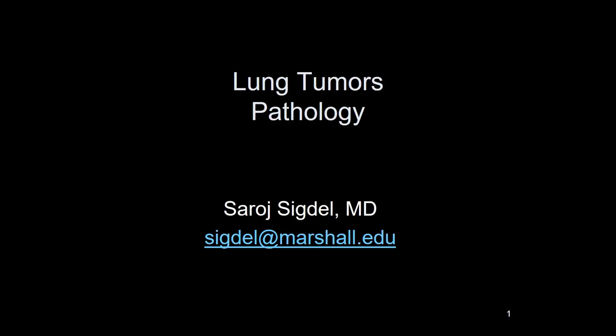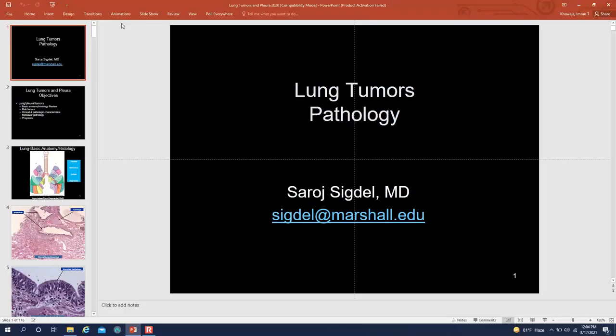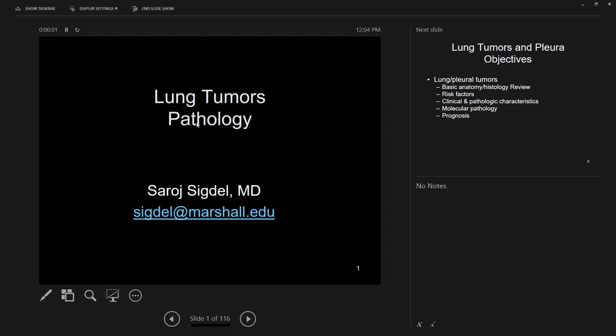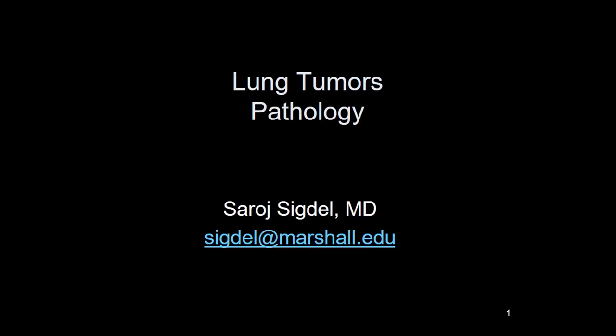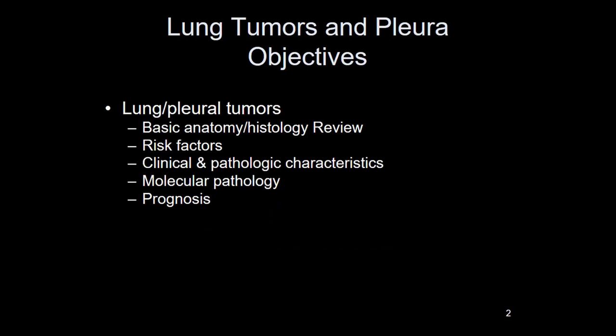We'll start with today's introductory lung histopathology. We'll cover histology and then the tumors — two sessions today and next time. When it comes to lung tumors and pathology, you first need to know your histology well. If you know your histology, you know where the tumor is coming from, how the tumor behaves, and so forth. We'll cover basic anatomy, histology, risk factors, clinical-pathological characteristics, and a bit of molecular pathology, as well as prognosis.